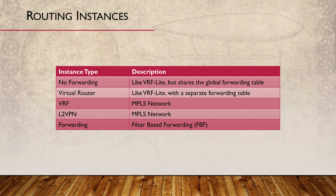The Juniper equivalent of VRF Lite is called Routing Instances. There are several types of these, the most common of which are listed here. The types that match VRF Lite the closest are the no forwarding and virtual router types. Both create an extra routing table. The virtual router type also creates a new forwarding table, while the no forwarding type does not. Routes from a no forwarding instance go into the global forwarding table. We might use a no forwarding instance if we want to run more than one instance of a dynamic routing protocol. Unlike Cisco, Juniper does not let you run multi-instance routing protocols, but you can have one per routing instance.